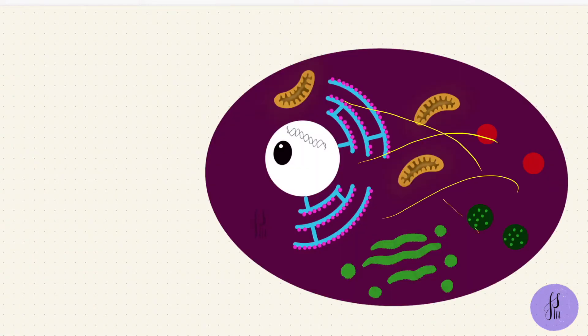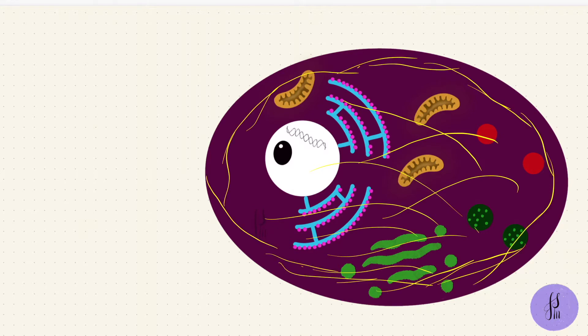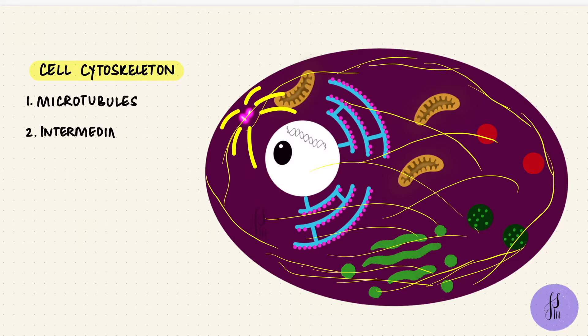Just a quick recap of part 1. The cytoskeleton is a framework of protein filaments inside the cell, which is needed for a lot of functions, including the most obvious one which would be providing structure and support to the cell. There are three important groups: microtubules, intermediate filaments, and microfilaments.